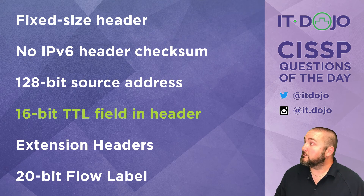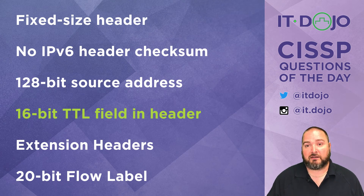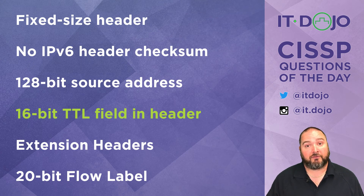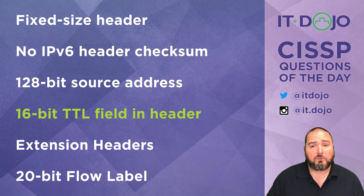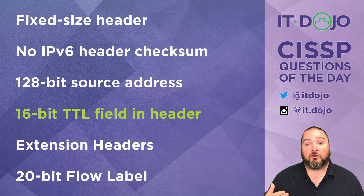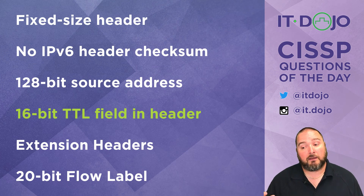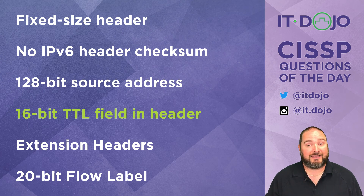The last answer choice says there's a 20-bit flow label field — that's absolutely true. There is a 20-bit field in an IPv6 header that allows you to identify flows. There has been a lot of discussion for many years about ways organizations might use this field, but it very much exists in the IPv6 header.